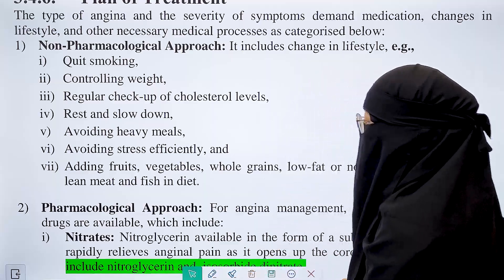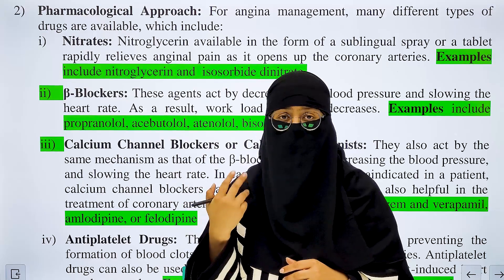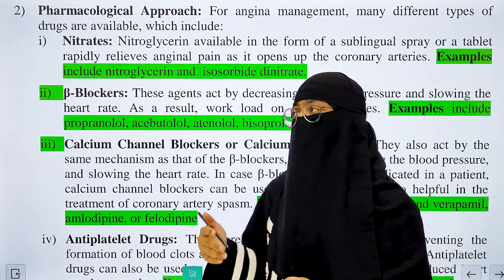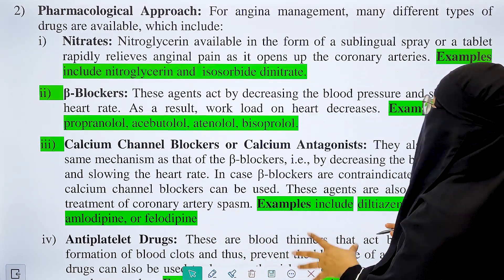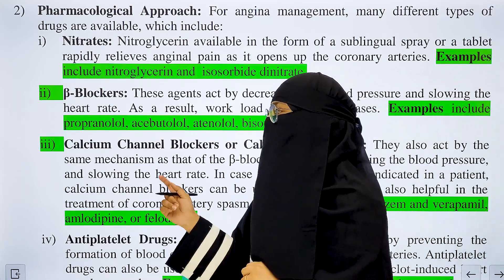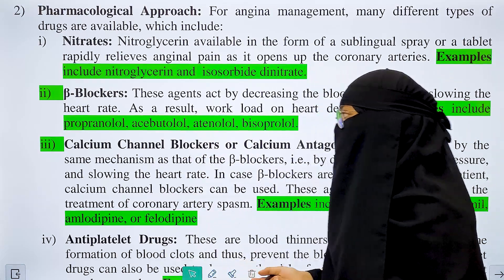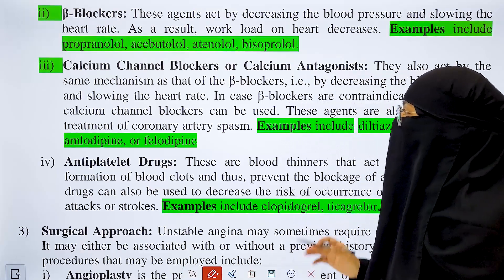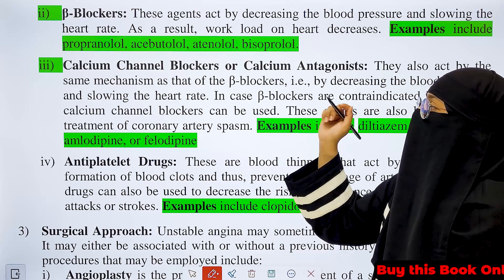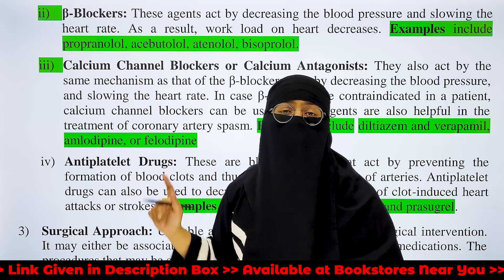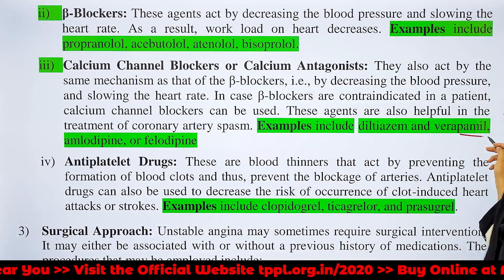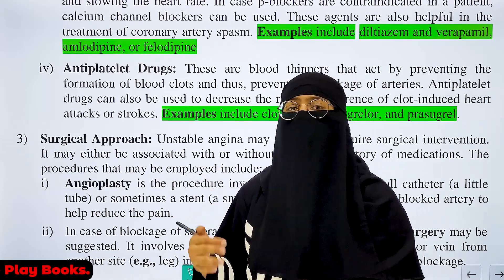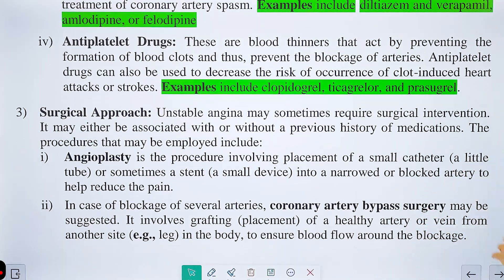The pharmacological approach involves drugs. The first is nitrates, mainly nitroglycerin, which is very helpful to relieve chest pain. It is administered as a sublingual spray. Beta blockers such as propranolol, acebutolol, atenolol, and bisoprolol help reduce blood pressure. Calcium channel blockers and calcium antagonists work similarly to beta blockers. Antiplatelet drugs such as clopidogrel and prasugrel prevent clot formation by acting as blood-thinning agents.